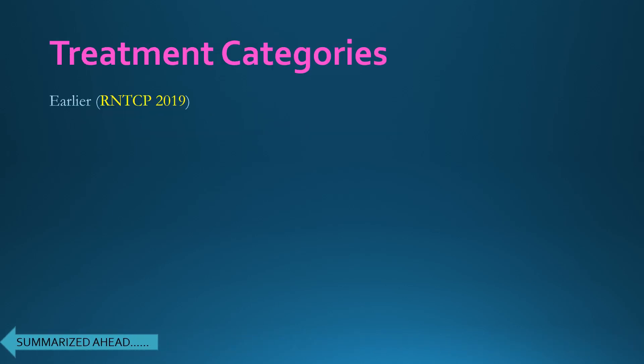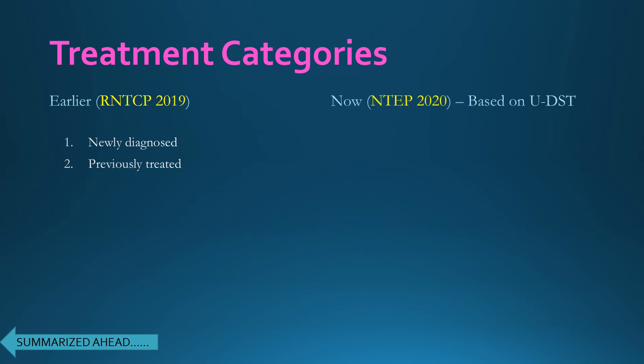As per the Revised National Tuberculosis Program 2019, there were two treatment categories: newly diagnosed and previously treated. However, as per the National Tuberculosis Elimination Program, since it is based on universal drug sensitivity testing, the treatment categories are now drug sensitive or drug resistant. If the patient is sensitive to all drugs, he will be treated with first-line ATT; otherwise, he follows the drug resistance TB pathway.